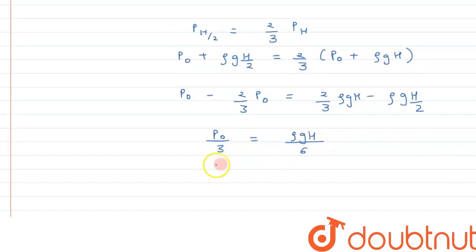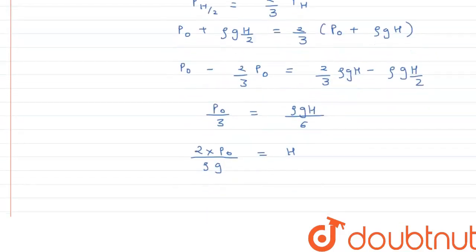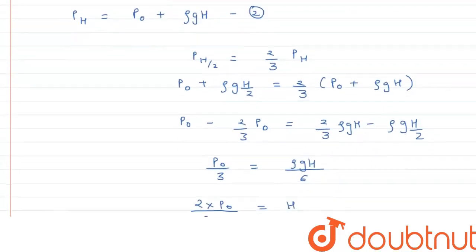Here it can be written as 2P₀ divided by ρg, and that gives us the value of H. On substituting this value, we can write 2 into P₀...